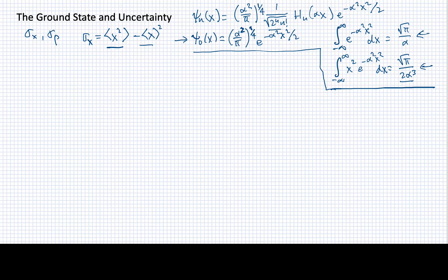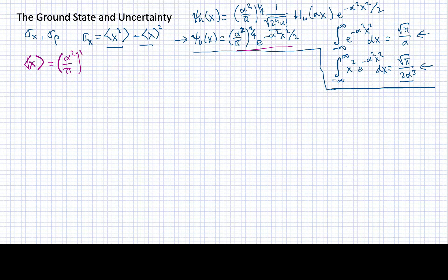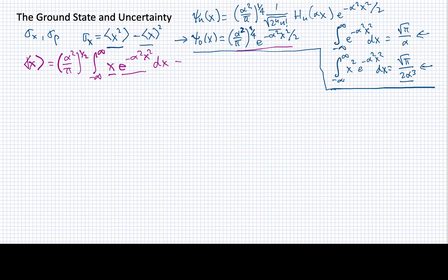For the case of the expectation value of the position, we'll note that when I put two factors of this ground state in the integrand, I'm going to get a factor of this normalization constant to the one-half instead of the one-fourth. I'll then have the integral from x e to the minus alpha squared x squared dx. We'll note that this is an odd function and this is an even function, so we can immediately write down that this is going to be zero.